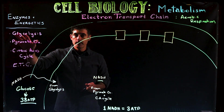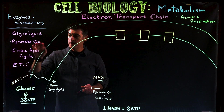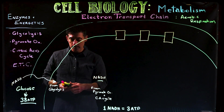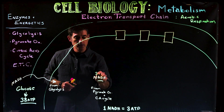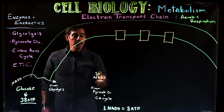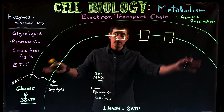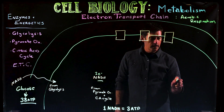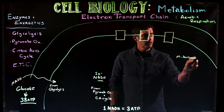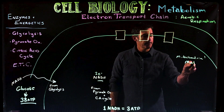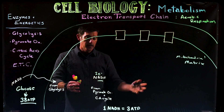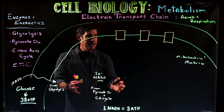We covered glycolysis, pyruvate oxidation, and the citric acid cycle. Each of these processes produces NADH molecules. NADH is our electron carrier — it carries two electrons and a proton. Some NADH are made in the cytoplasm during glycolysis, and the other NADH are made inside the mitochondria. This sketch represents the mitochondria, and the area we're looking at is the mitochondrial matrix — that's the space where both the citric acid cycle and pyruvate oxidation occur, so those NADH are already in that space.